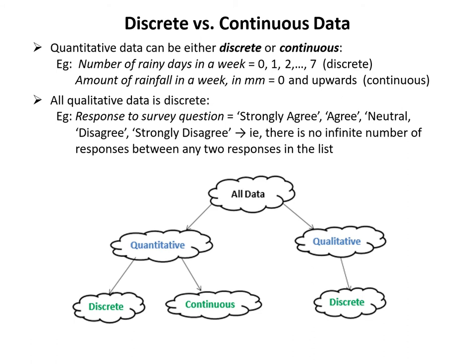Qualitative data, which is non-numerical, is always discrete, because it's generally represented with words or other character strings. A typical example of qualitative discrete data would be responses to survey questions — such as strongly agree, agree, neutral, disagree, strongly disagree. There's not an infinite number of responses between any two responses in the list. So the important thing to remember is that while quantitative data can be discrete or continuous, qualitative data is always discrete.